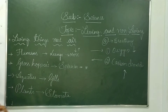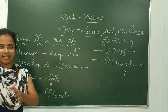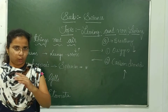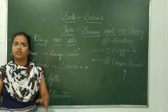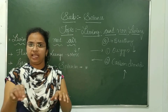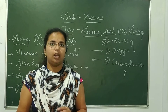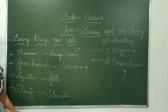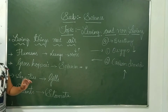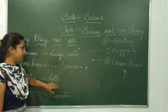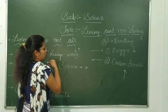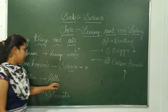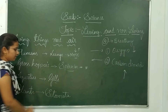Aquatic animals — what are these aquatic animals? Fish, shark, octopus, and many other things we see in water or underwater. Such organisms are called aquatic organisms. They use gills. Human beings use the nose, grasshoppers use spiracles, and aquatic animals use gills.